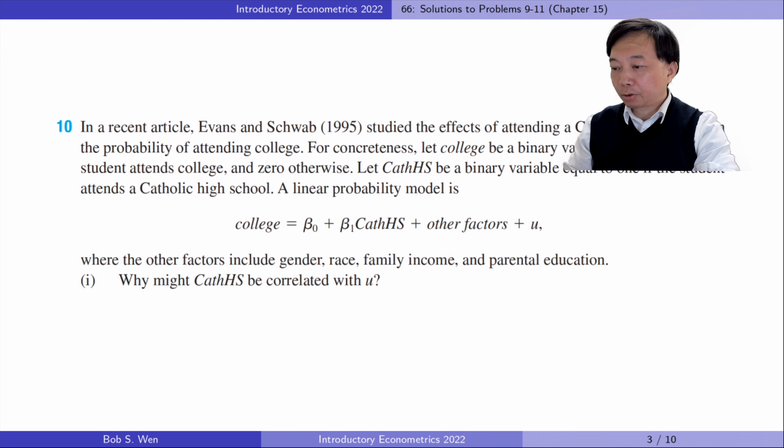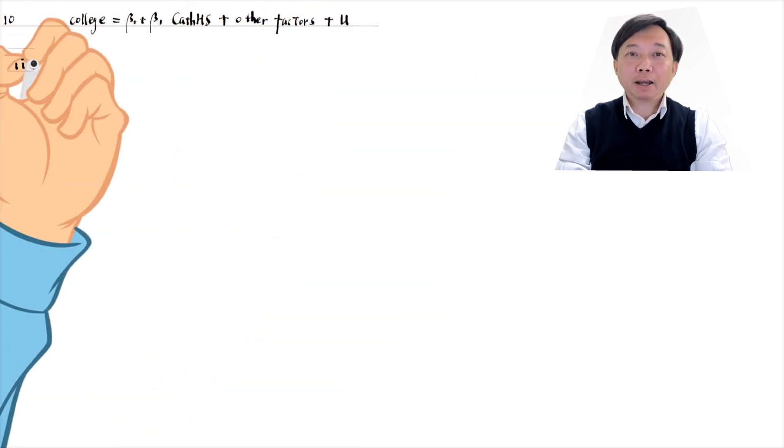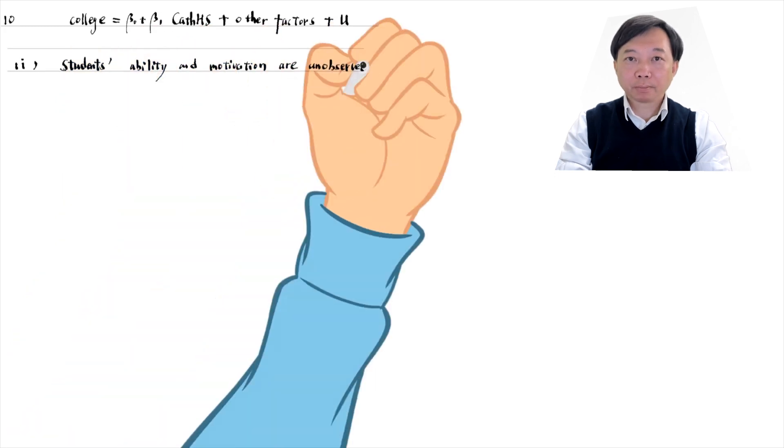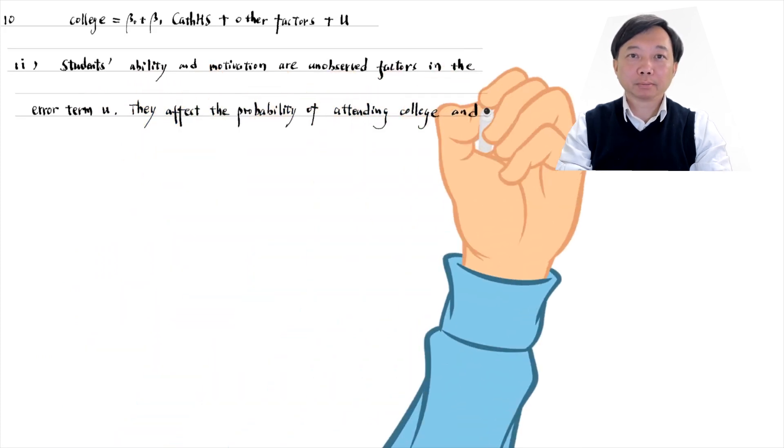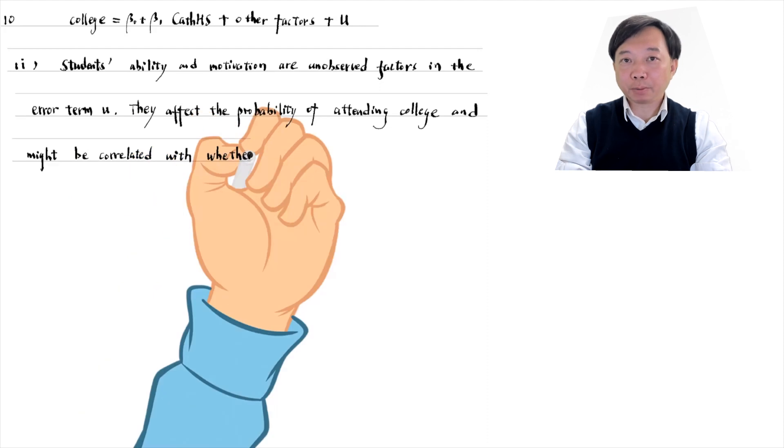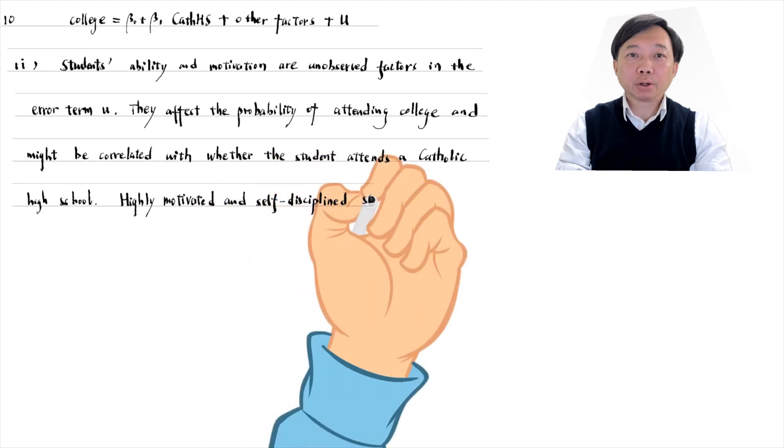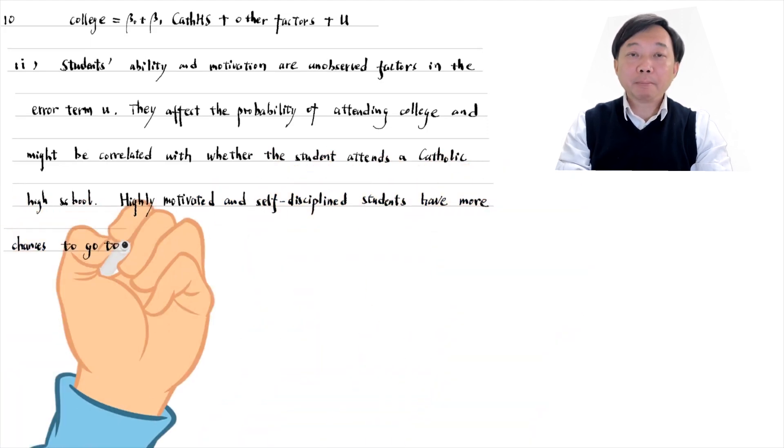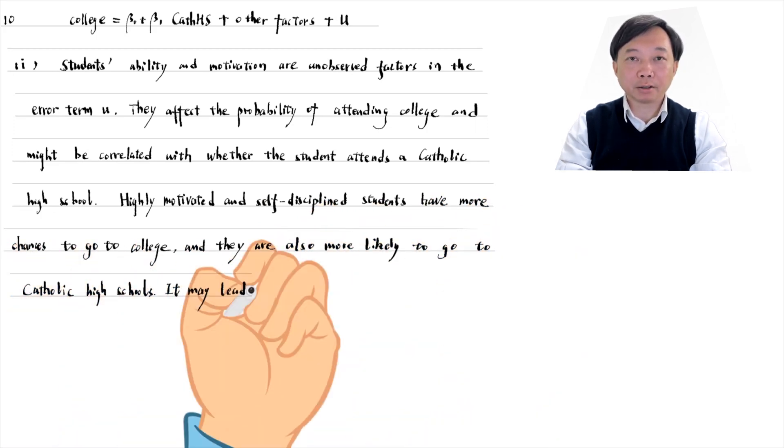In part 1, why might CASHS be correlated with the error term? Students' ability and motivation are unobserved factors in the error term. They affect the probability of attending college and might be correlated with whether the student attends a Catholic high school. Highly motivated and self-disciplined students have more chances to go to college and they are also more likely to go to Catholic high schools. It may lead to an upward biased OLS estimate for the coefficient on the variable whether to attend a Catholic high school.